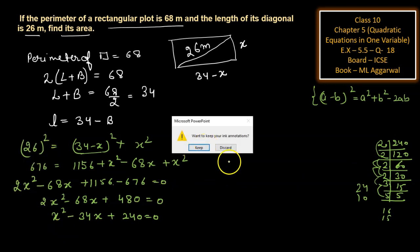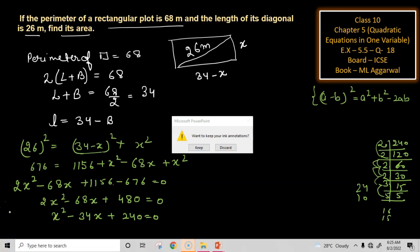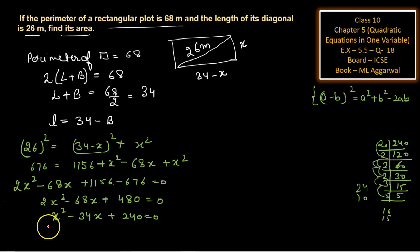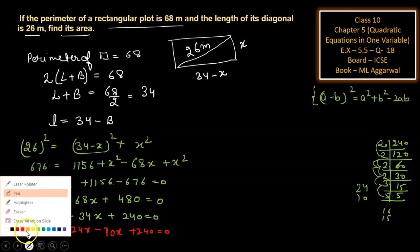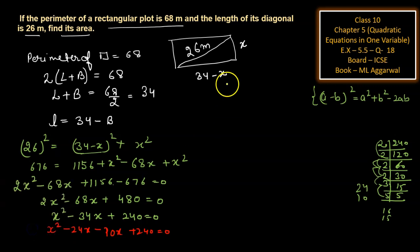We factor this as x² minus 24x minus 10x plus 240 equals 0. Taking x common from the first two terms gives x(x-24), and taking 10 from the last two terms gives -10(x-24)=0, so (x-24)(x-10)=0.